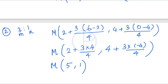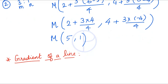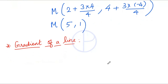Next, by using two coordinates we can find the gradient of a line. The gradient of a line is a measure of how steep a two-dimensional line is. A larger value means a steeper line. If the gradient is positive the line goes upwards; if the gradient is negative the line goes downwards.